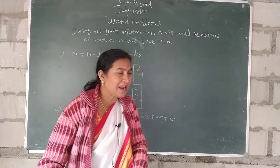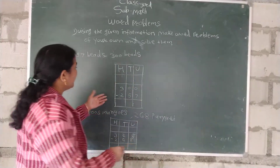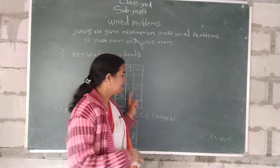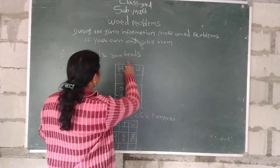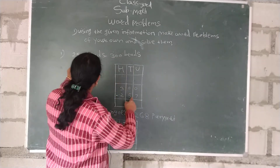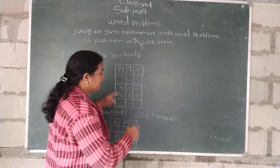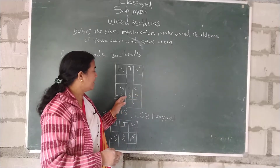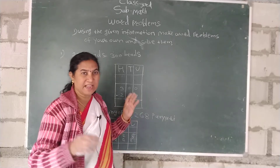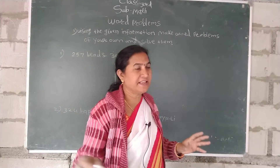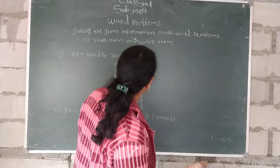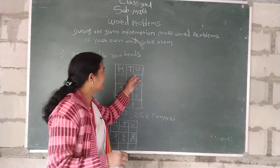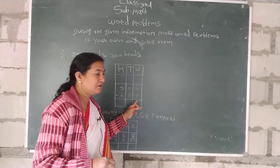You should always solve the problem. 7, 0, 7. Now, how many 300 beds? 257 beds. 200 beds, because it comes from there. One may need to make sure it comes from there. So this is the unit of 3,000 beds.